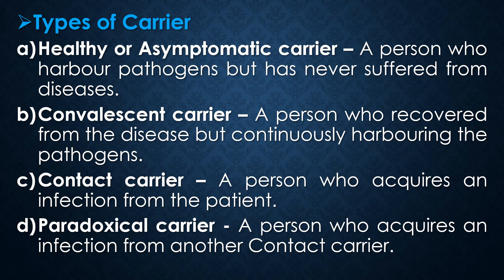A healthy or asymptomatic carrier is a person who harbors pathogens but has never suffered from the disease. A convalescent carrier is a person who has recovered from the disease but continues harboring the pathogens. A contact carrier is a person who acquires an infection from a patient. A paradoxical carrier is a person who acquires an infection from another contact carrier.